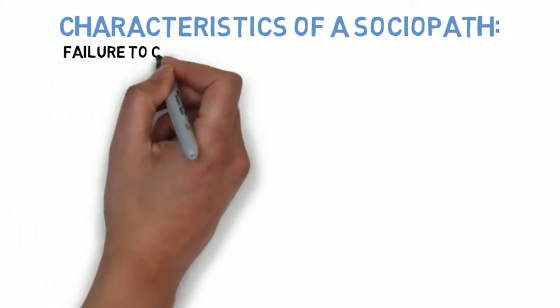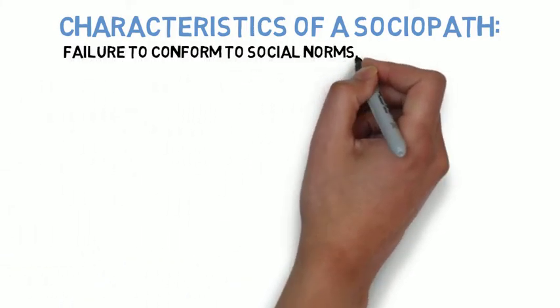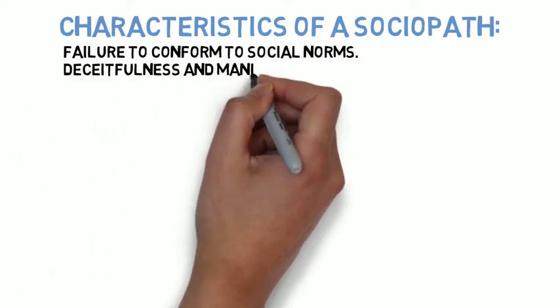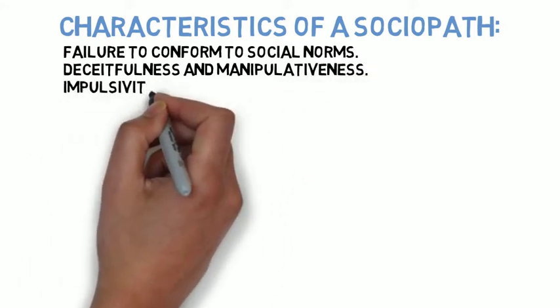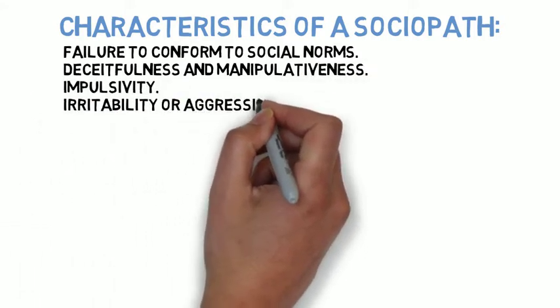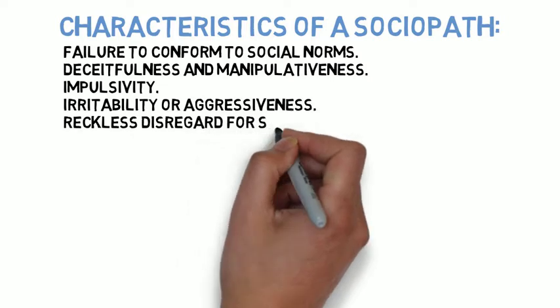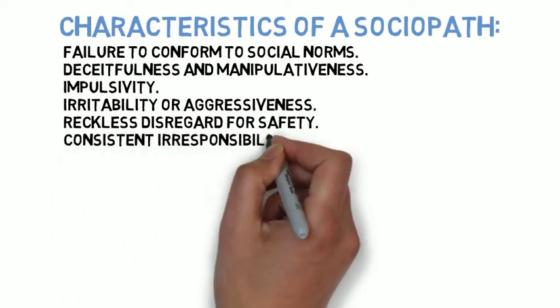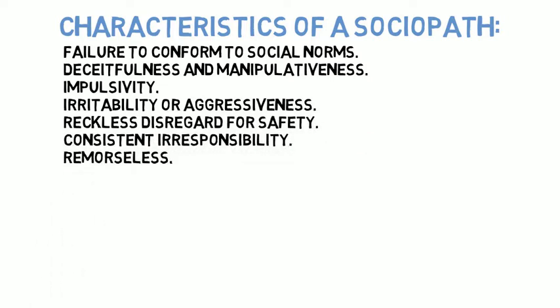The characteristics of someone who suffers from antisocial personality disorder are a failure to conform to social norms, deceitfulness or manipulativeness, impulsivity or a failure to plan ahead, irritability or aggressiveness, reckless disregard for the safety of yourself or others, consistent irresponsibility, and a lack of remorse after having hurt, mistreated, or stole from another person.